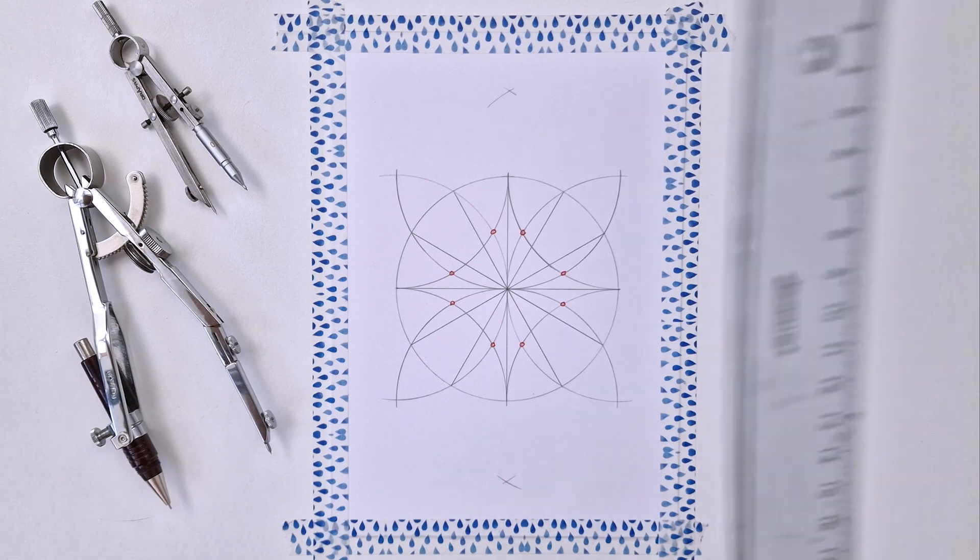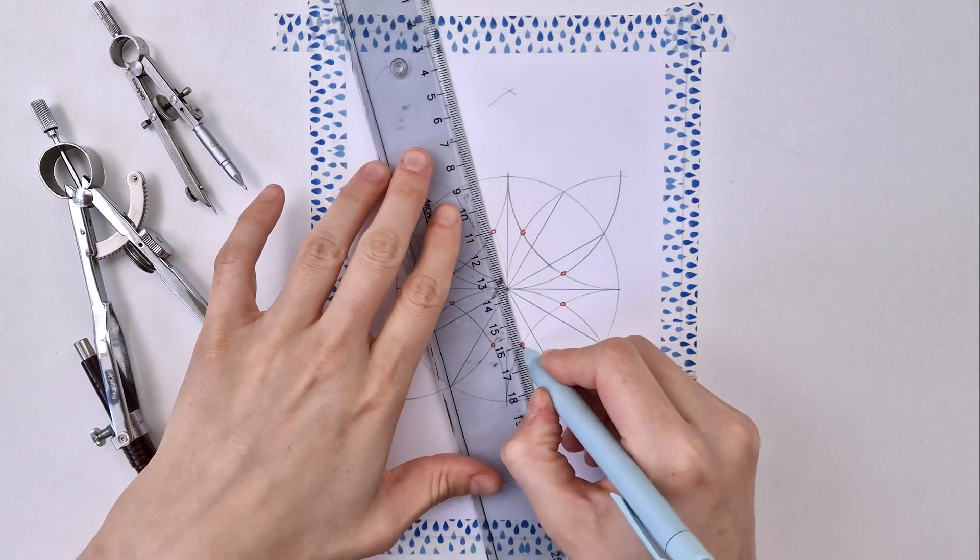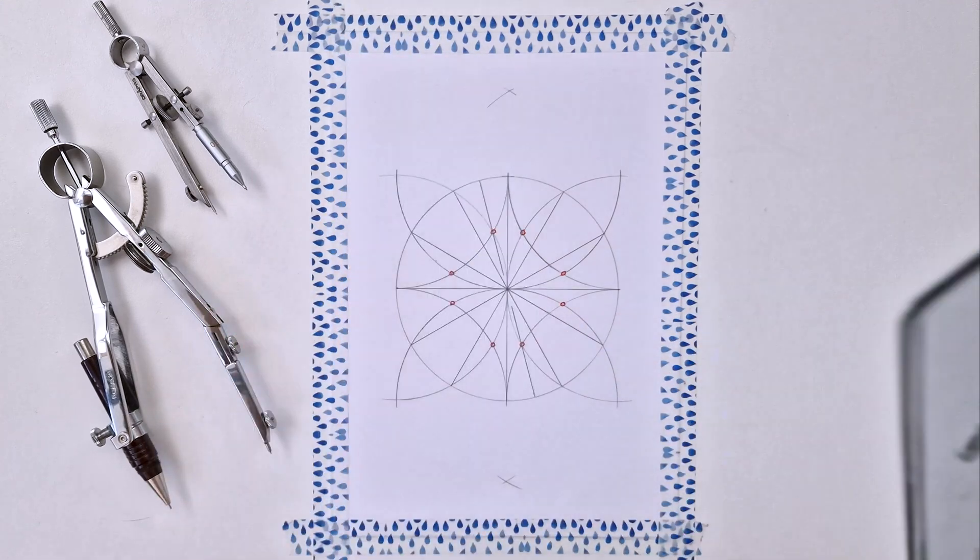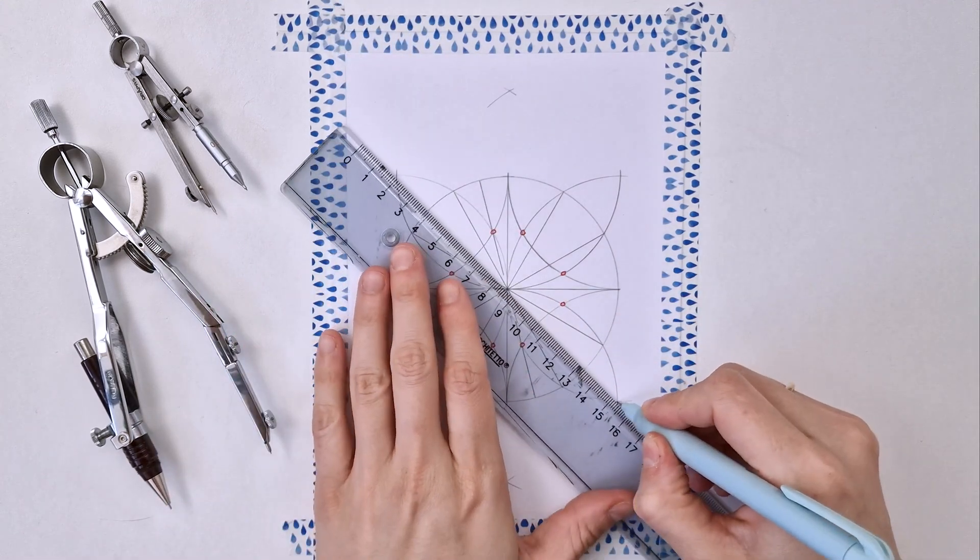Making sure the line passes through the center and dividing our circle into 24 equal parts. I'm also adding the diagonal which I forgot to do at the beginning.